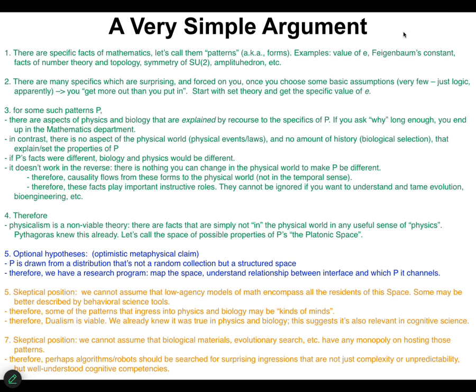In a certain sense, you can say that causality flows from these mathematical properties to the physical world. When I say causality, I don't mean in the temporal sense of first A happened and it was the cause for B happening. I mean that if you want to explain what's going on in biology or physics, and better than explain, if you want to build new things, if you want to control what happens and make new capabilities, you have to understand these properties of these mathematical objects. The properties of those mathematical objects determine what you're going to be doing in the physical world. These things play instructive roles in a very pragmatic sense—you can't ignore them if you want to understand evolution, biomedicine, engineering, or whatever.